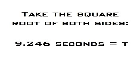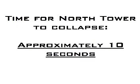The final step: we take the square root of both sides of the equation, giving us 9.246 seconds equals time — the precise amount of time it would take an object in complete freefall to hit the ground from the top of the North Tower. As we will see in a moment, the North Tower went down in just about 10 seconds, which is statistically equivalent to the 9.246 seconds result from our formula.